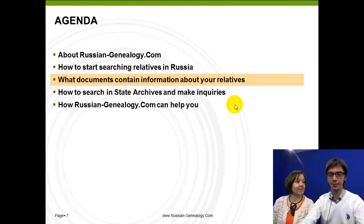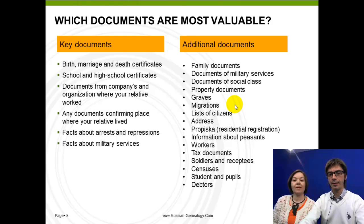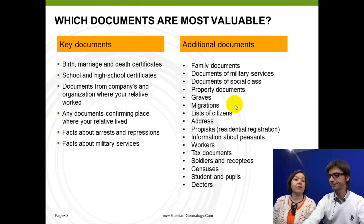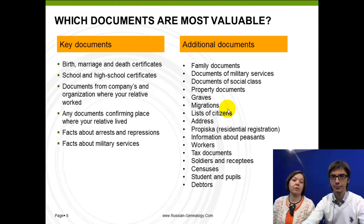Imagine that you have done all this work — you know exactly where your relatives come from, approximately what age they lived, and you're ready to start. What documents should you be checking? We structure documents into two main segments: key documents and additional documents. Key documents are very important. They include birth, marriage, and death certificates, school and high school certificates, documents from companies and organizations where your relatives served, documents from the army, facts about arrest and repressions, and other facts.